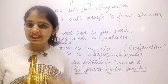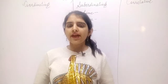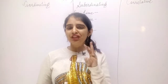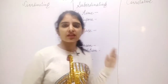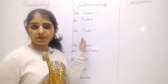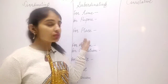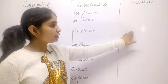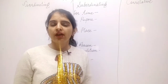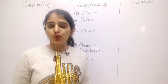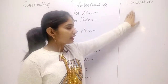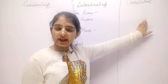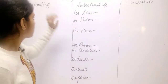So today we will learn two types of conjunctions: first is coordinating conjunctions, and second is subordinating conjunctions. I have written three types here — basically there are two main types, and since you have upgraded your class, we will add correlative conjunctions as well.